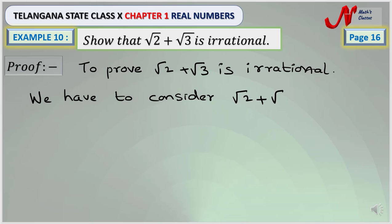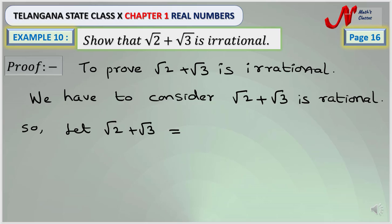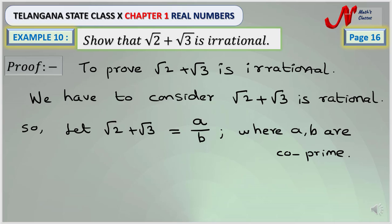So let √2 + √3 = a/b, where a and b are co-primes. We already know that co-prime means they do not have any common factor other than one. So to solve this, we transpose √3 to the RHS.